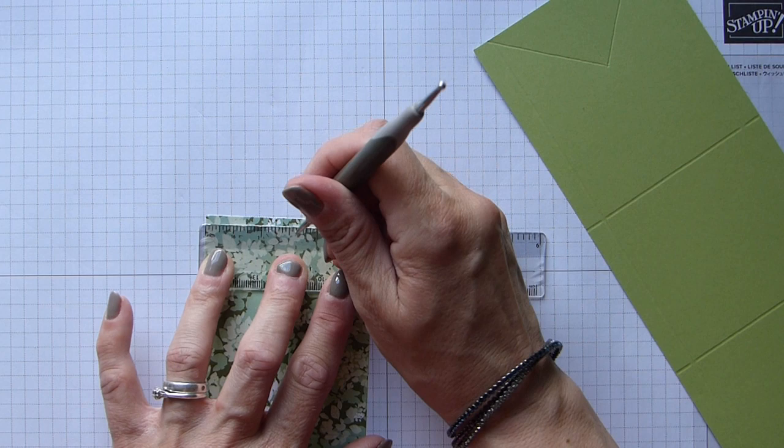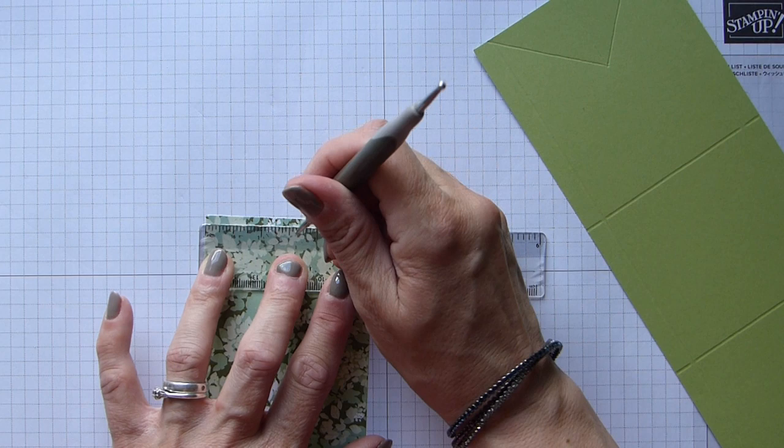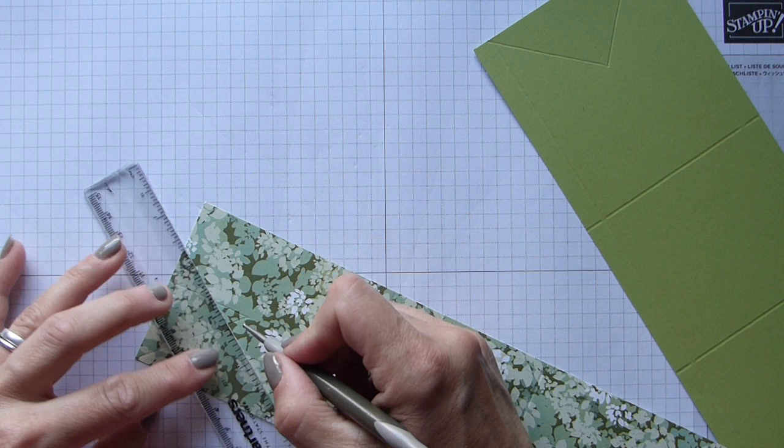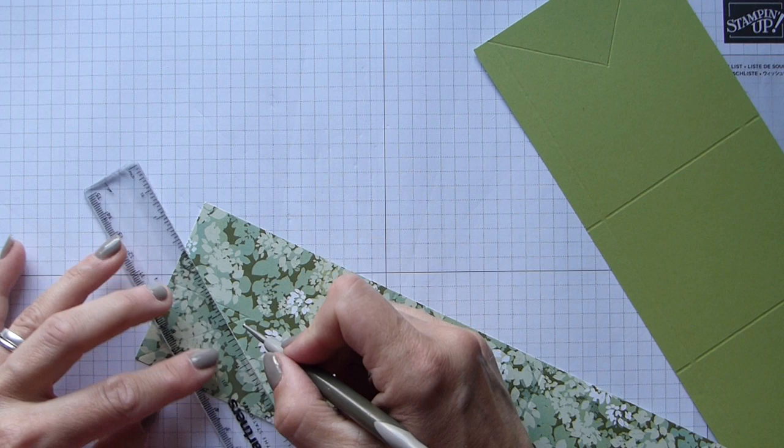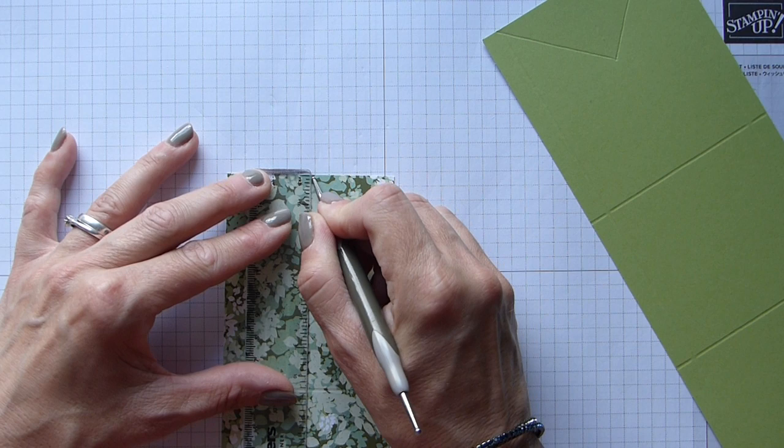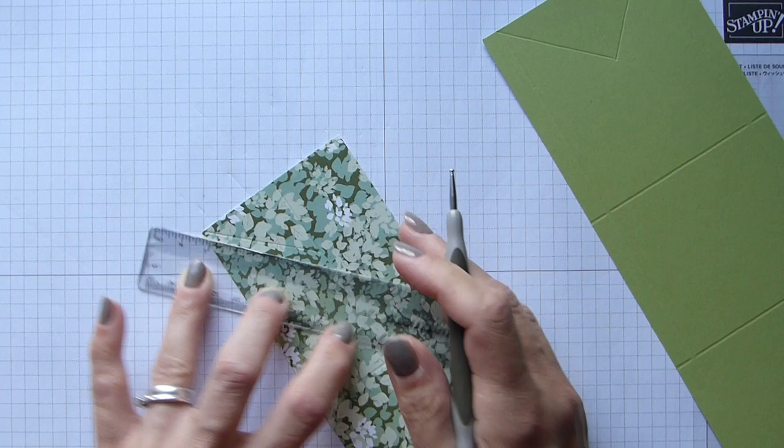We're doing exactly the same with the DSP. Mark, score down 1 and a half, and then score to the top corner of the paper. Same again on this side—1 and a half, 1 and a half down, and then out to the corners.